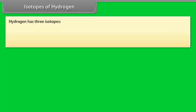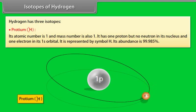Isotopes of Hydrogen. Hydrogen has three isotopes. Protium: Its atomic number is 1 and mass number is also 1. It has one proton but no neutron in its nucleus and one electron in its 1s orbital. It is represented by symbol H. Its abundance is 99.985%.